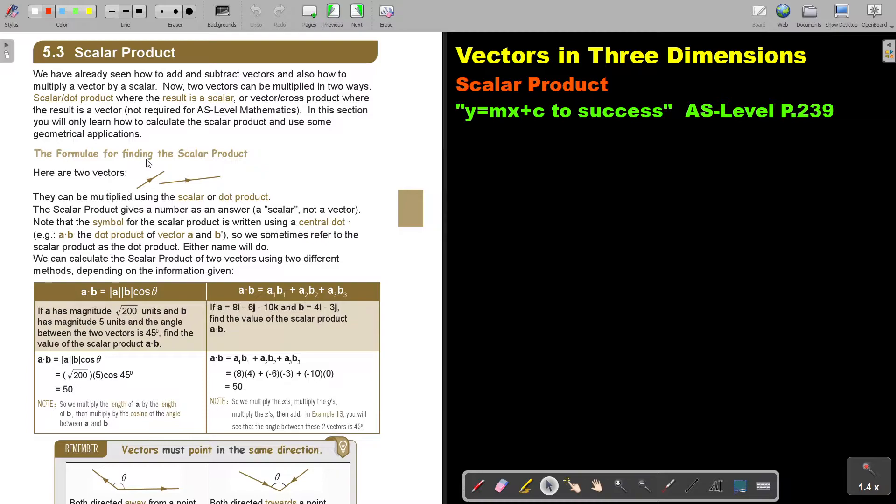The formula for finding the scalar product. Here are two vectors. They can be multiplied using the scalar or dot product. The scalar product gives a number as an answer. A scalar, not a vector. Note that the symbol for the scalar product is written using a central dot. It's a bit small and you don't see it so well. It's like a dot there in the middle.